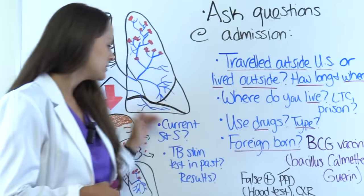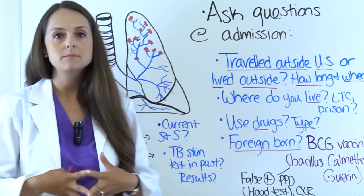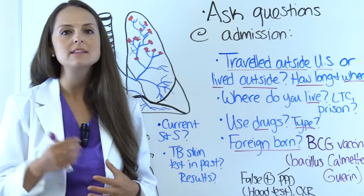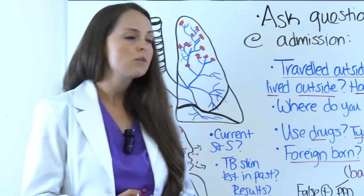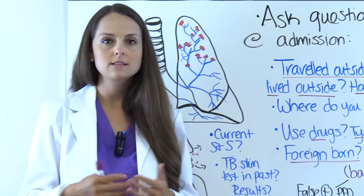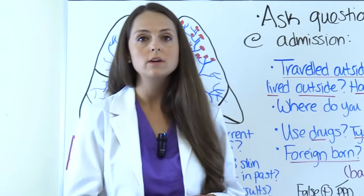Ask about signs and symptoms because active tuberculosis presents with specific findings: a cough lasting three weeks or more, blood-tinged sputum, fever, night sweats, fatigue, unintentional weight loss, chills, loss of appetite, chest pain, and pain with breathing or coughing. Also ask if they have had a TB skin test, when it was done, and what the results were.